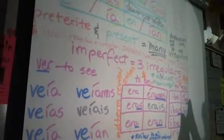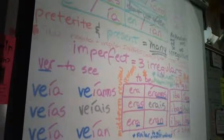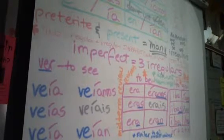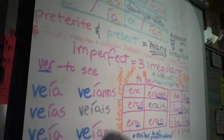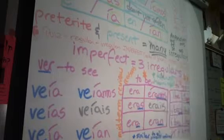For the rest of your irregulars, you just have to remember what they are, but you only have three. Remember that ver does use v-e as its stem, and then the rest of your endings are going to be your regular e-r-i-r endings.